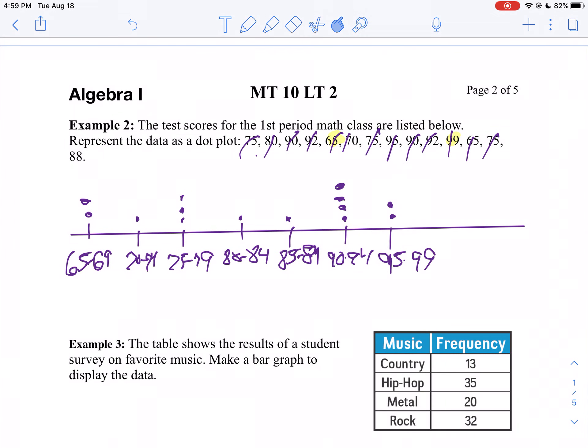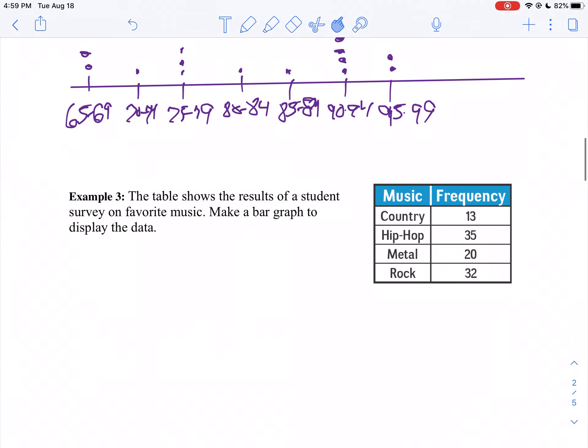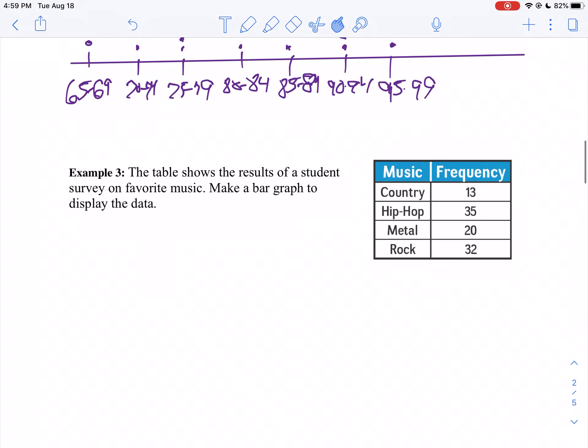On example three, we want to make a bar graph. A bar graph, we're using qualitative variables or categorical data. In other words, they can't be put together in numerical order or they can't be quantitatively justified. So I'm not going to do this on the calculator. It's just going to be straight by hand.